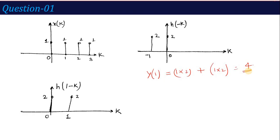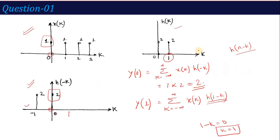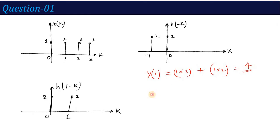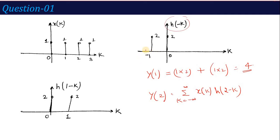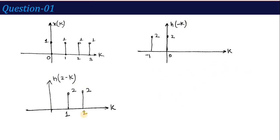For Y(2), we need h(2 minus k). Shifting h(minus k) by 2, the values move to positions 1 and 2. Multiplying X(k) with h(2 minus k): at k equals 1, 1 times 2 equals 2; at k equals 2, 1 times 2 equals 2. Adding gives Y(2) equals 4.